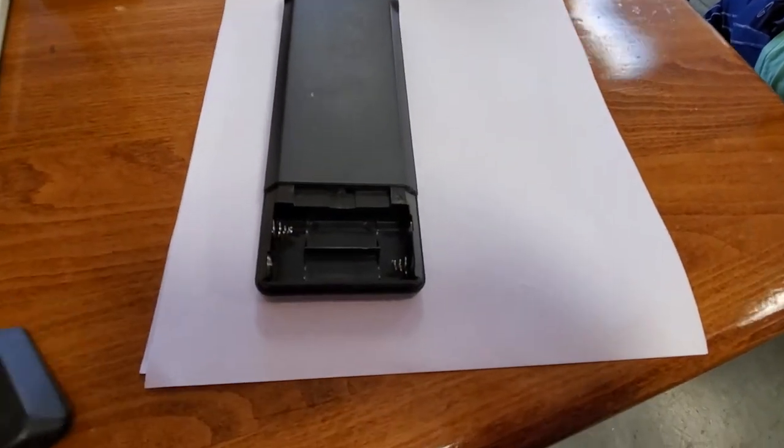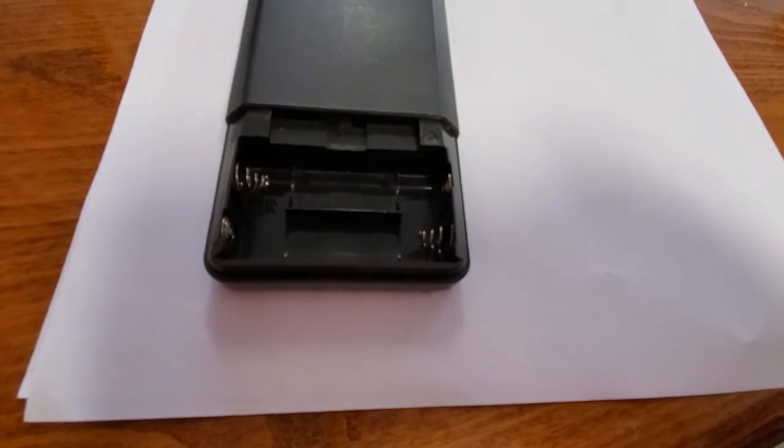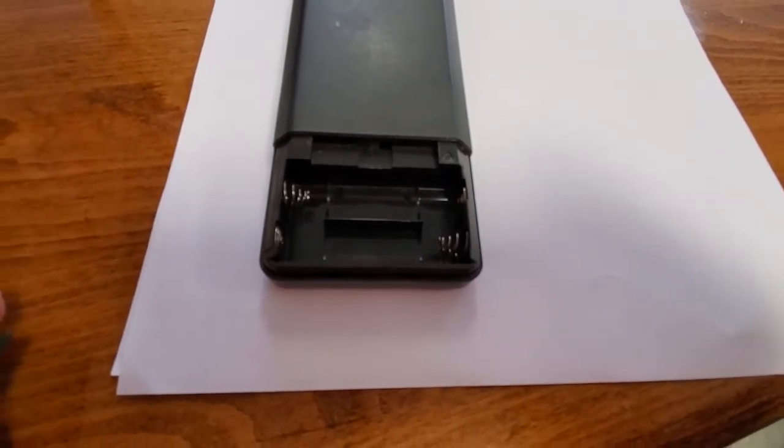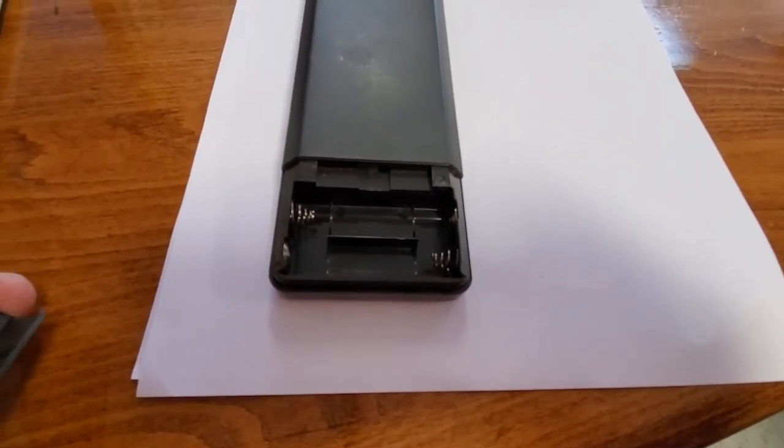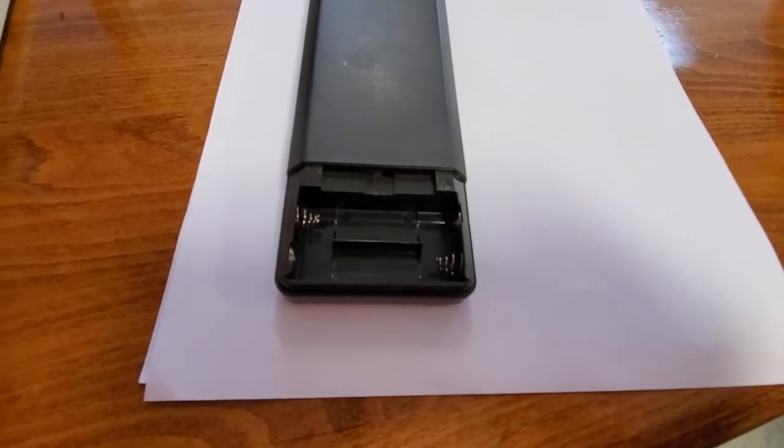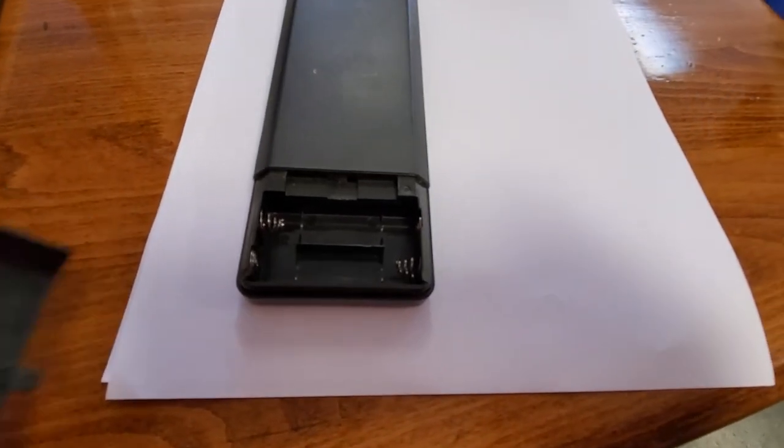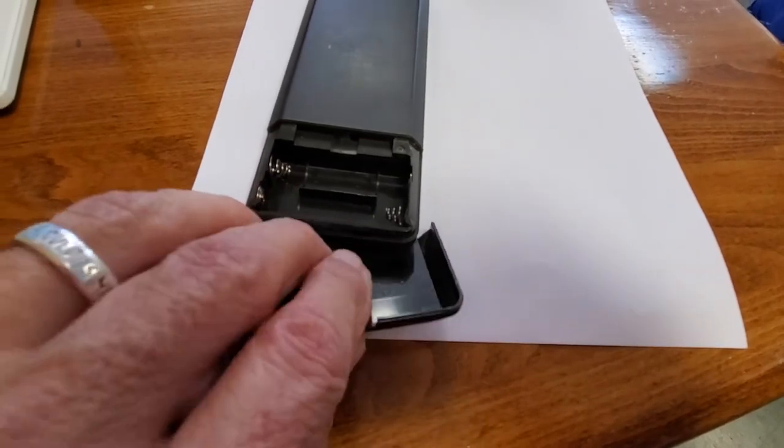I open up the remote, take a close-up of the battery compartment showing if there's any damage. If there is any damage, I try my best to clean it out with baking soda or white vinegar. Actually take a picture like this with the back and the back of the thing.